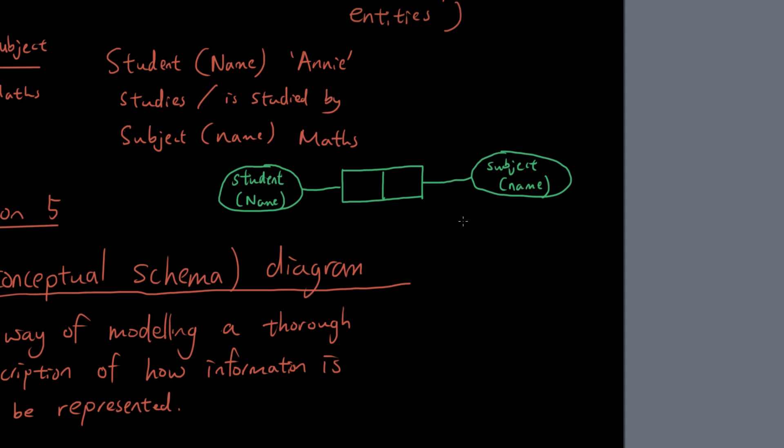Now within the rectangles is where you put the roles. So you would put student studies subject in the left box and if you read it this way from left to right you would say student study subject. And then you would put is studied by in the second box. So subject is studied by student. And yeah so I guess you can say this is your first CES diagram.